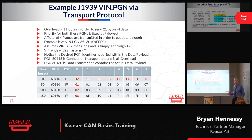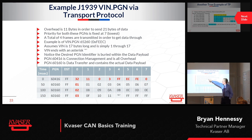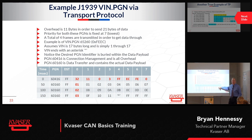NMEA 2000 fixed that — you can prioritize within the transport layer. It takes a total of 4 frames to transmit 21 bytes of data. This particular example is the vehicle identification number, PGN 65260. The PGN number in transport protocol is buried within the first byte, and the PGN is FEEC — remember, you have to reverse the byte order, the Intel/Motorola byte ordering issue.